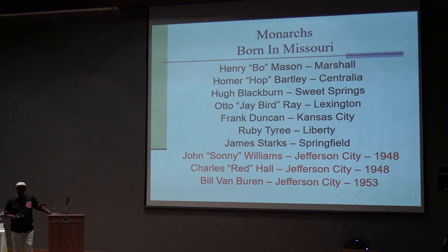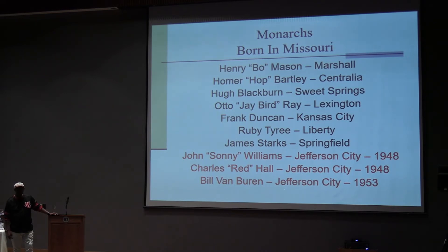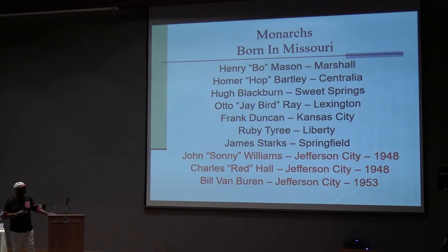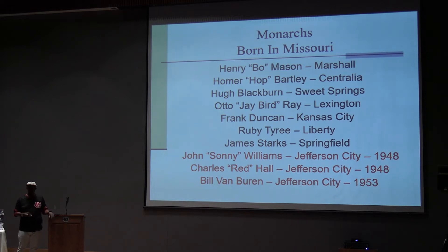I want to mention a few of the Kansas City Monarchs that came from Missouri. You might recognize some of these cities. Bo Macy made it to the major leagues with the Phillies — he's still alive, by the way. Hop Bartley from Centralia. Jay Burr Ray was a World War I veteran from Lexington. Frank Dunkey from Kansas City. James Stark from Springfield. And then in 1948 and '53, the Monarchs recruited players from Jefferson City. I don't know what became of them, but they actually lived in Jefferson City and had a chance to suit up with the Monarchs during the late '40s and '50s — suiting up with players like Hank Thompson, Willard Brown, Gene Baker, and Elston Howard.